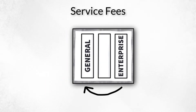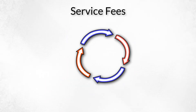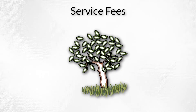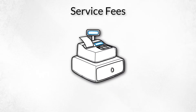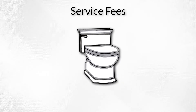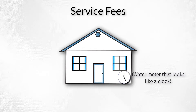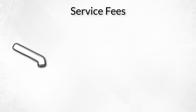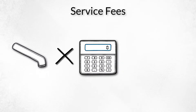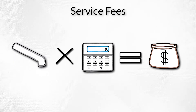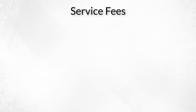Another important distinction: unlike public goods financed via taxes, each fee payer's consumption is measurable. For example, a water meter installed at a home tells the government how much to charge the resident for the service. If the user consumes 5,000 gallons of water, that volume will be multiplied by a rate and the resulting amount will be billed to the customer.